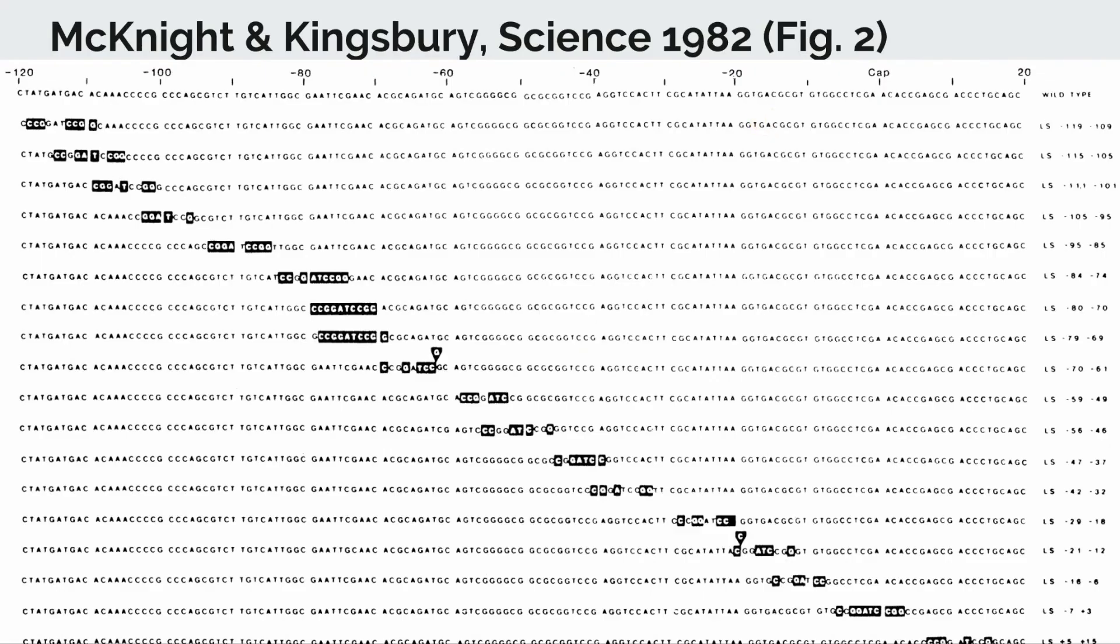These were the linker scan mutants used in the actual experiment in figure 10.20. The top row is the wild type promoter sequence with the plus one being here. Each of the highlighted regions in another row is a different mutant. The highlighted regions aren't always contiguous, as sometimes the inserted bases match the wild type bases. You can see that the researchers have tiled the whole promoter to maximize the resolution of data that can be generated from this experiment.